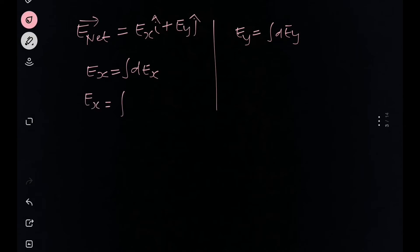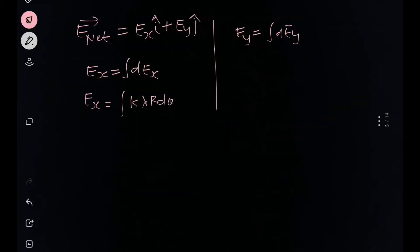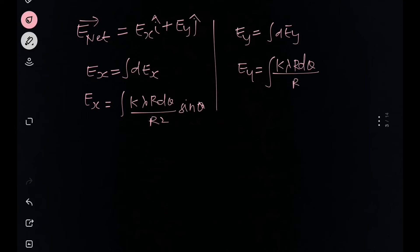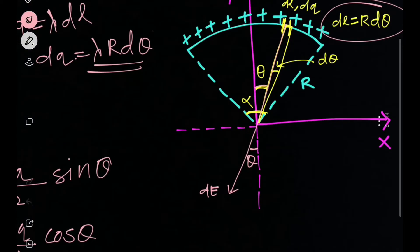Substituting dq = λ·r·dθ, we get Ex = ∫ k·λ·r·dθ/r²·sin(θ). The r cancels, giving Ex = (kλ/r)·∫sin(θ)dθ. Similarly, Ey = (kλ/r)·∫cos(θ)dθ.